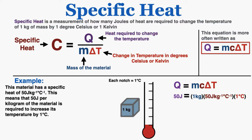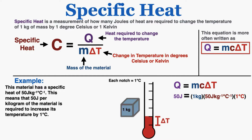This means that for every 1 degree Celsius that we want to change, we have to add or subtract 50 joules of energy per kilogram of the material present. I'm going to give you a visual in the bottom center showing what's happening as we change the heat, and also have the equation written out on the bottom right. So a specific heat of 50 joules literally means that if we add 50 joules of energy to 1 kilogram of the material, that's going to result in a temperature change of 1 degree.